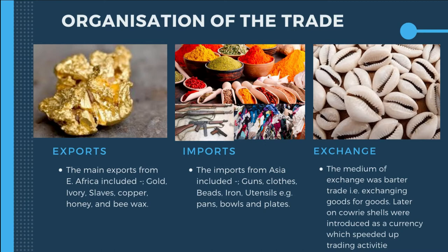The trade had two types of items: exports and imports. Exports were commodities provided by Africans and sent to Arabia, Persia, and other countries. The main African exports were gold, ivory, slaves, copper, honey, and beeswax. Imports were commodities brought in by foreigners — Arabs, Persians, Malaysians, Indians, and Chinese — including guns, clothes, beads, iron, utensils, and spices.